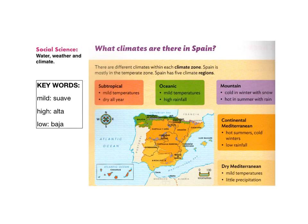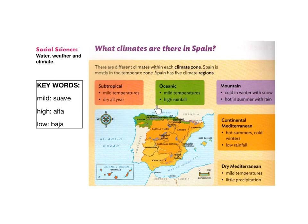Let's continue looking at the map of Spain. In most parts of the peninsula, we are going to find these climates: oceanic, mountain, continental, Mediterranean, and dry Mediterranean. In the northern communities like Galicia, País Vasco, and Cantabria, we find mild temperatures and high rainfall. This climate is called oceanic because all these autonomous communities are surrounded by the Atlantic Ocean.